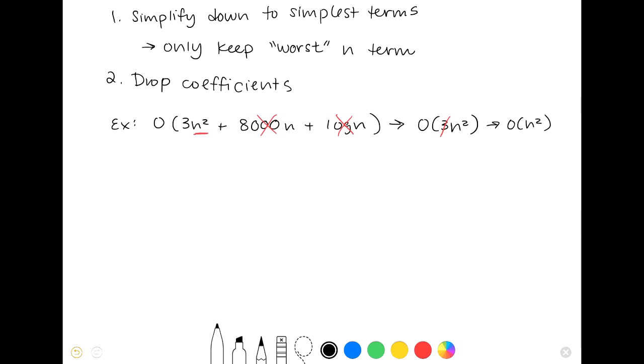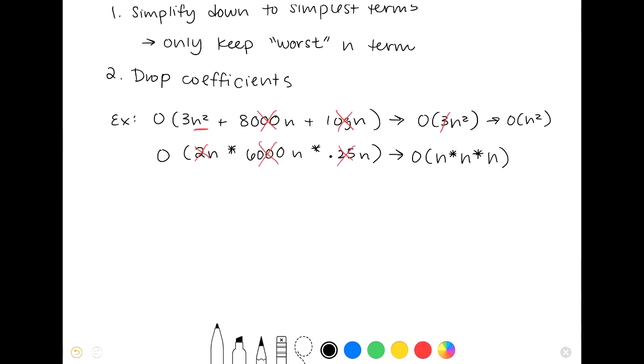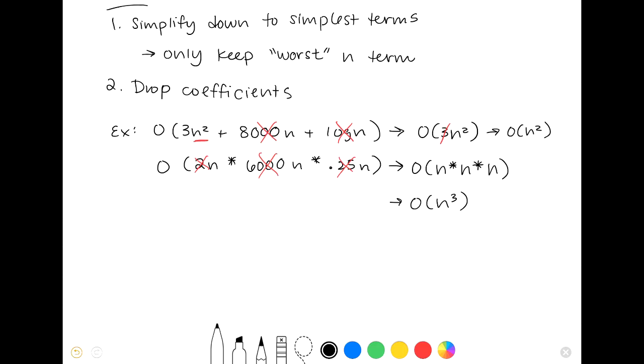In another example, we have O of 2n times 6,000n times 0.25n. So to save ourselves some math, let's go ahead and cross out those coefficients. So we end up with O of n times n times n. And so we have to multiply the three of these together in order to get this Big O down to its simplest form. So then we end up with O of n cubed, which even though it's not one of the common types we discussed above, O of n cubed is of a similar form to O of n squared, which is n to a power. So this is also considered okay.